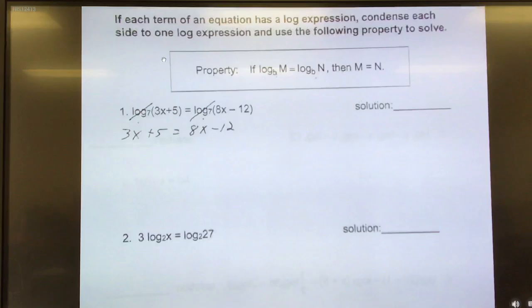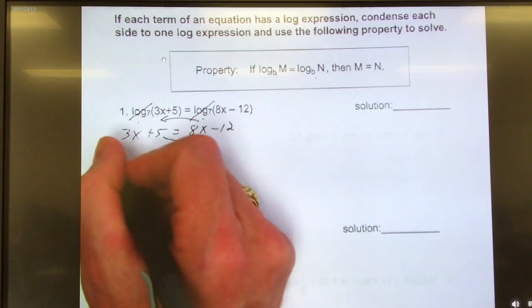Now that's just basic algebra to solve for x. Move my 8x across, move my 5 across. So that's 3x minus 8x equals negative 12 minus 5.